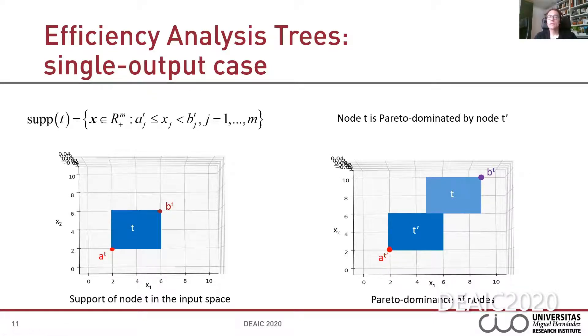Additionally, the property of free disposability in the case of dealing with trees is related to a new definition of Pareto dominance of nodes in this case. In the figure on the right, node t is dominated by node t prime because there is a point in the support of t prime such that it Pareto dominates at least one point belonging to the support of node t. For example, point at prime dominates point bt because the input components of point a are less than the input components of point b. This definition of Pareto dominance will be key for the proof of satisfaction of free disposability in the case of the EAT technique, the new approach.